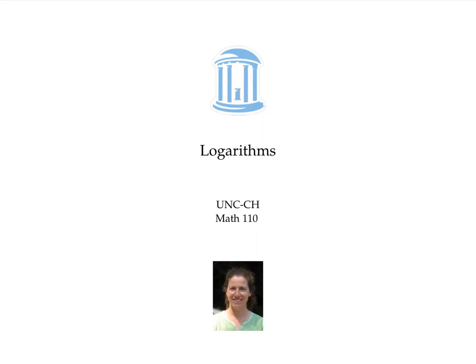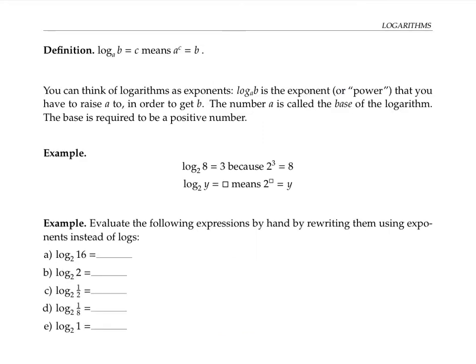This video introduces logarithms. Logarithms are a way of writing exponents. The expression log base A of B equals C means that A to the C equals B. In other words, log base A of B is the exponent that you raise A to, to get B. The number A is called the base of the logarithm. It's also called the base when we write it in exponential form.